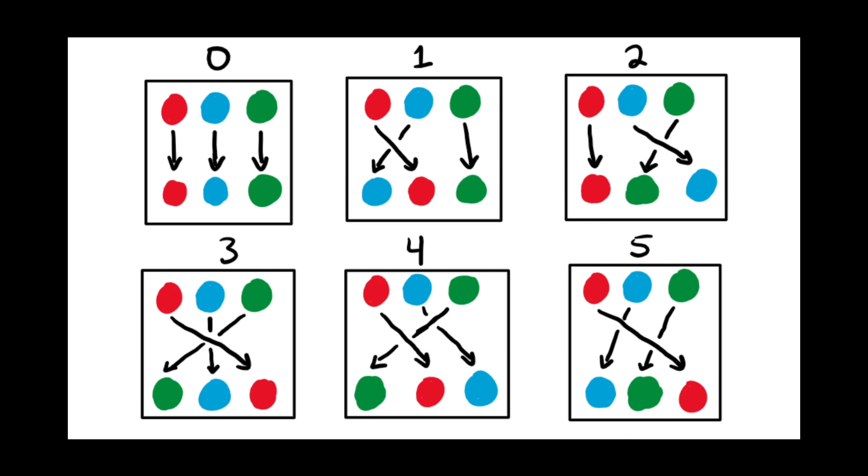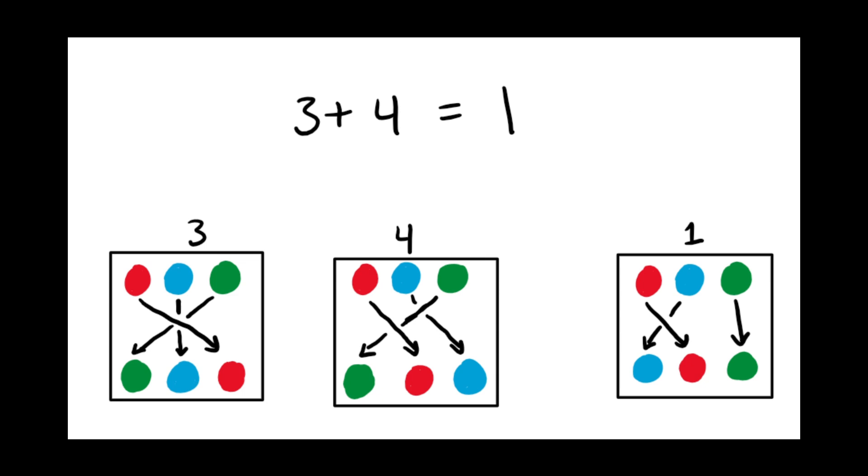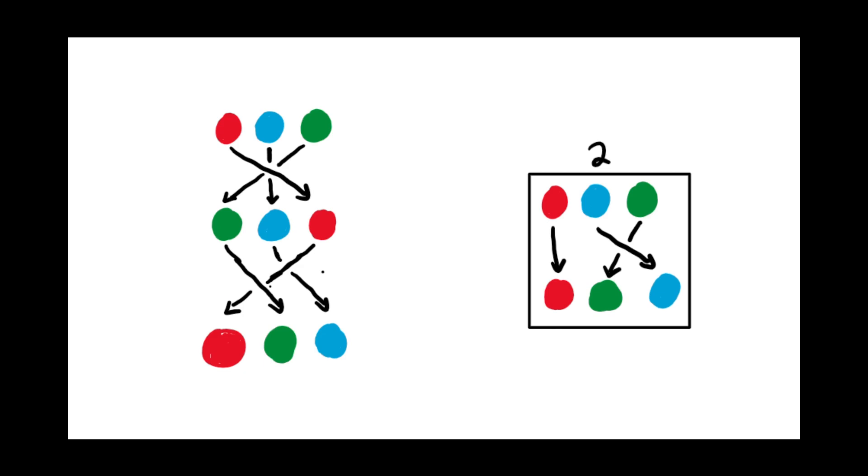Now notice, in the 6 hour clock, 3 hours past 4 o'clock is 1 o'clock. So if these two groups were the same, we'd expect that if we do the permutation paired with 3 and the permutation we paired with 4, then we get the permutation we paired with 1. But when we actually work it out, we get the 3 permutation combined with the 4 permutation gives us the 2 permutation.